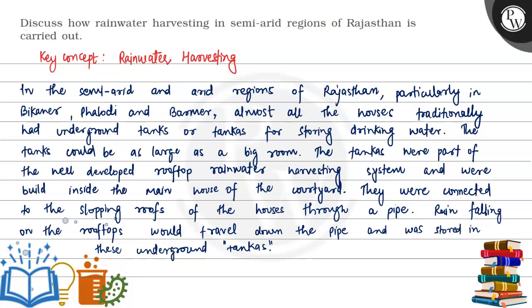Let's see this question. The question asks us to discuss how rainwater harvesting in semi-arid regions of Rajasthan is carried out. So the key concept of the question is rainwater harvesting in these semi-arid and arid regions of Rajasthan.